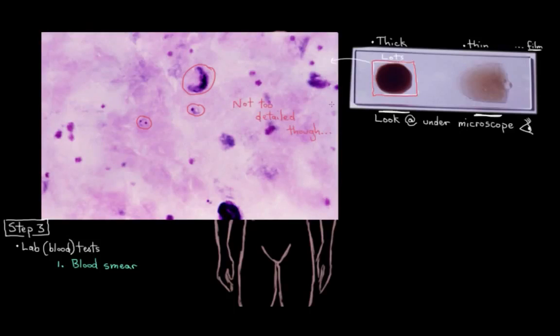But we don't get too much detail in a thick film. And remember that there's a couple different types of plasmodium: falciparum, vivax, ovale. But we can't really differentiate them on a thick film. We need our thin film for that.